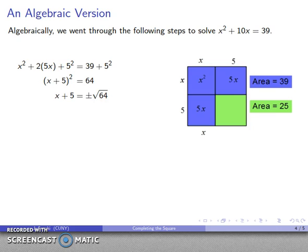And so that tells me x plus 5 is plus or minus the square root of 64. Because we're looking at algebra, we're no longer restricted to having positive lengths. So I have to indicate that by pointing out that we could have a plus square root of 64 or a minus square root of 64.